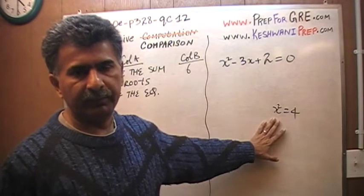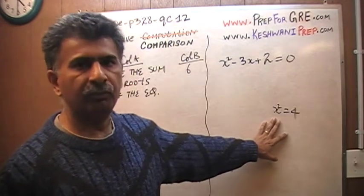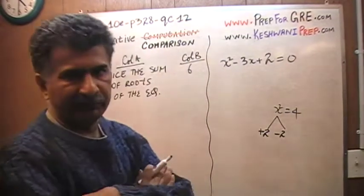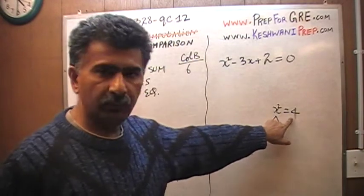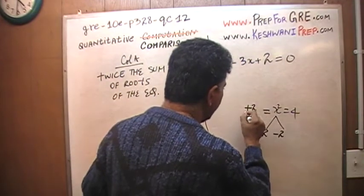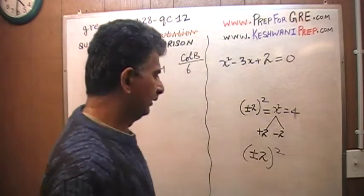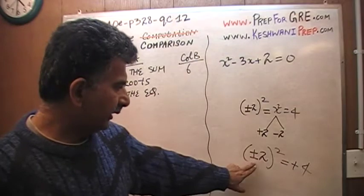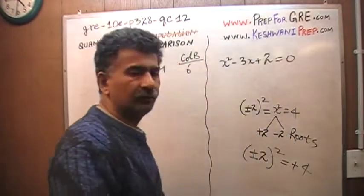If you're saying to yourself that x equals 2, that's only half the answer. There are 2 roots — this equation has 2 roots. In other words, there are 2 values of x that will satisfy the equation. Positive 2 times positive 2 is 4, and so is negative 2 times negative 2. So this equation has 2 roots: positive 2 and negative 2. Both of these quantities equal positive 4. Positive 2 and negative 2 are called roots of the equation.